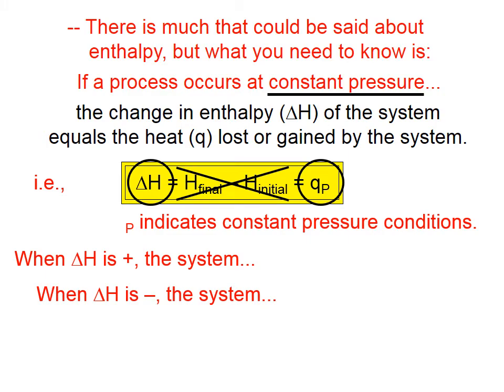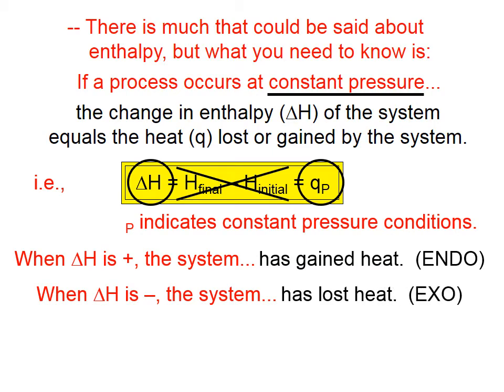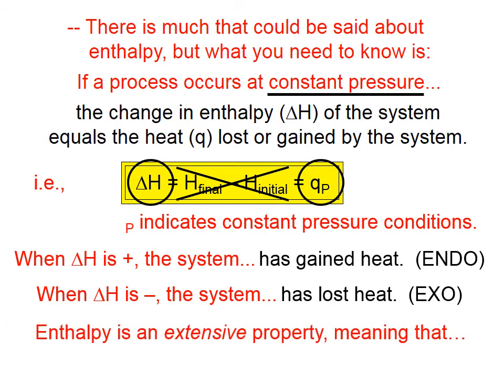When the change in enthalpy is positive, the system has gained heat. That would be an endothermic process and an endergonic process. When the change in enthalpy is negative, the system has lost heat, so that would be an exothermic process and an exergonic process.